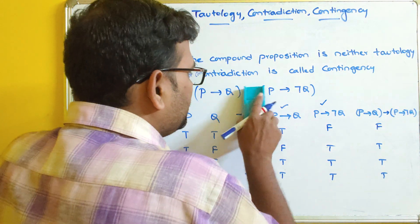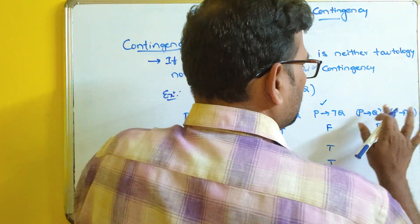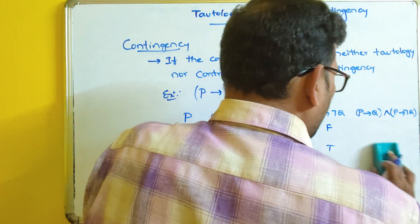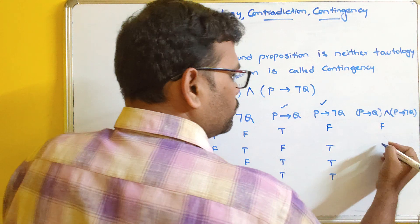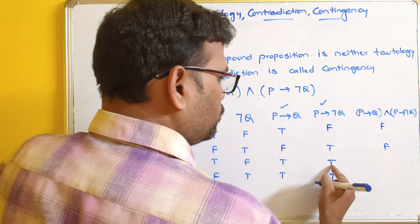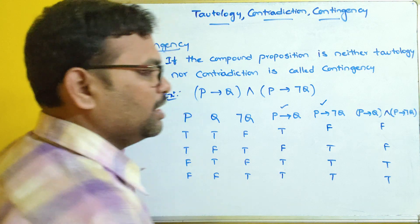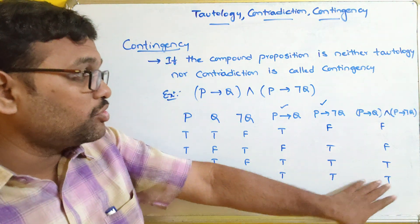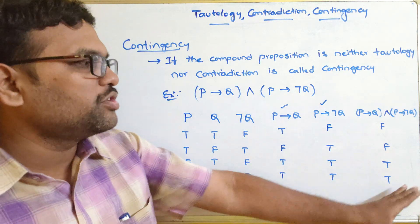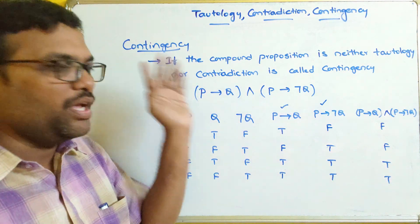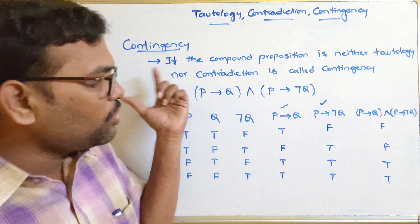If we use the AND operation on P → Q and P → ¬Q directly, we get: false, false, true, true — a combination, so it is also a contingency. If we apply OR, the result is all true, making it a tautology.